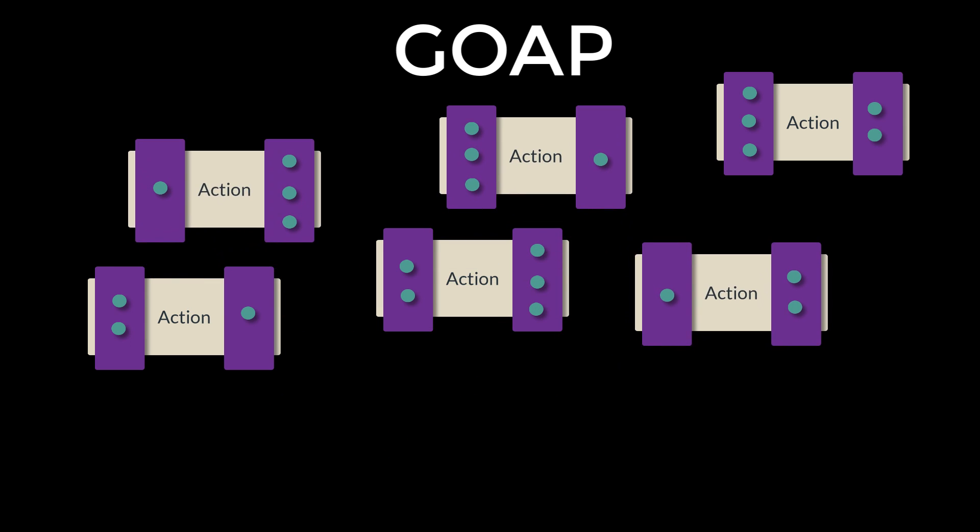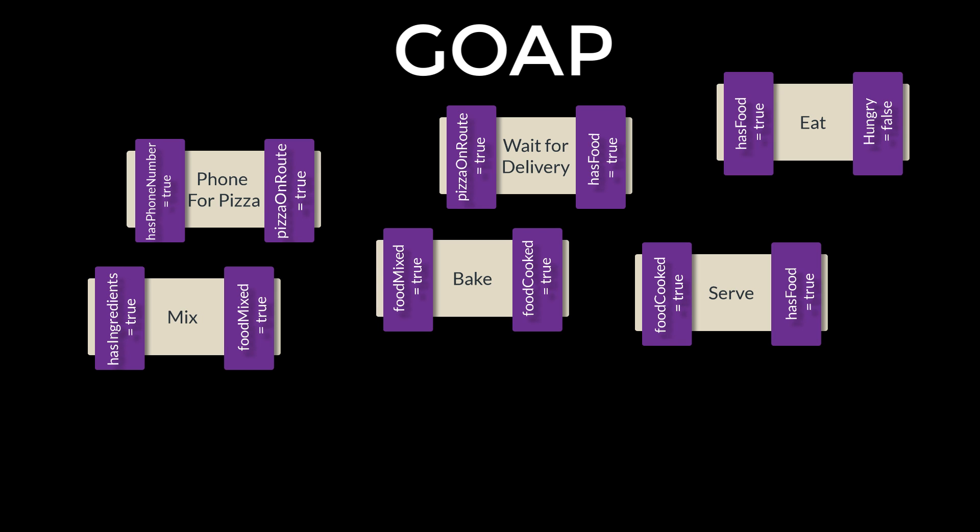Let's look at an example. Consider this set of actions — if you take a close look, you will see they focus on eating. You might be able to see two plans you could form yourself: one for ordering pizza and one for baking. An agent with these actions won't do anything until presented with a goal. In this case, let's trigger the goal 'hungry equals false'. The goal is the end state of the agent, not the starting state. A recurring human goal is to have hungry equal false as often as possible.